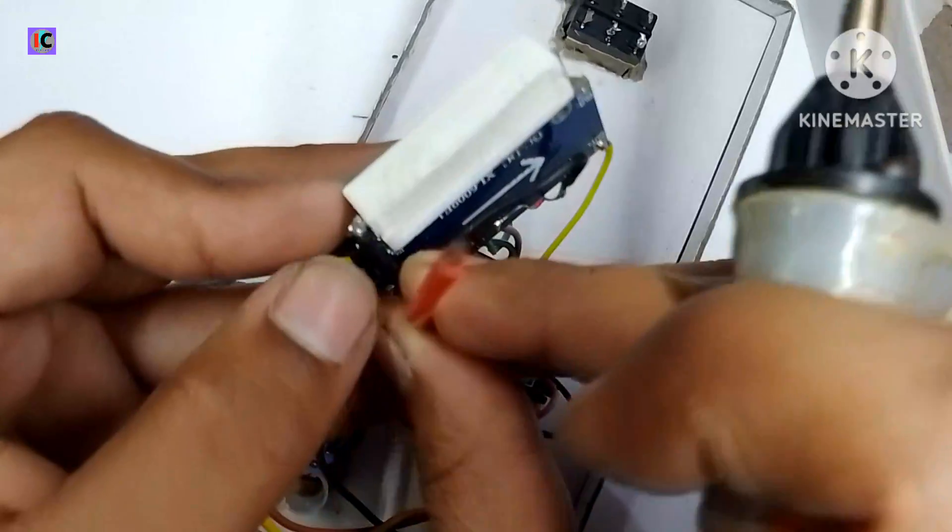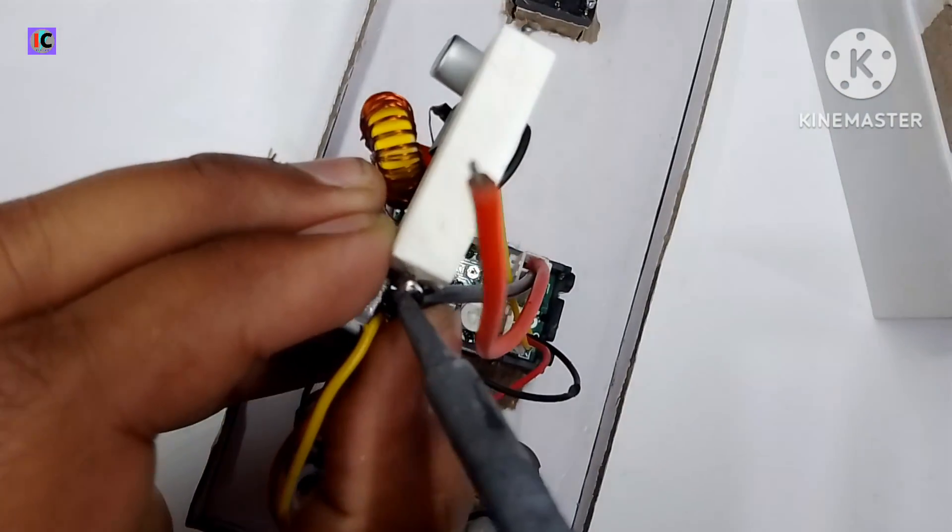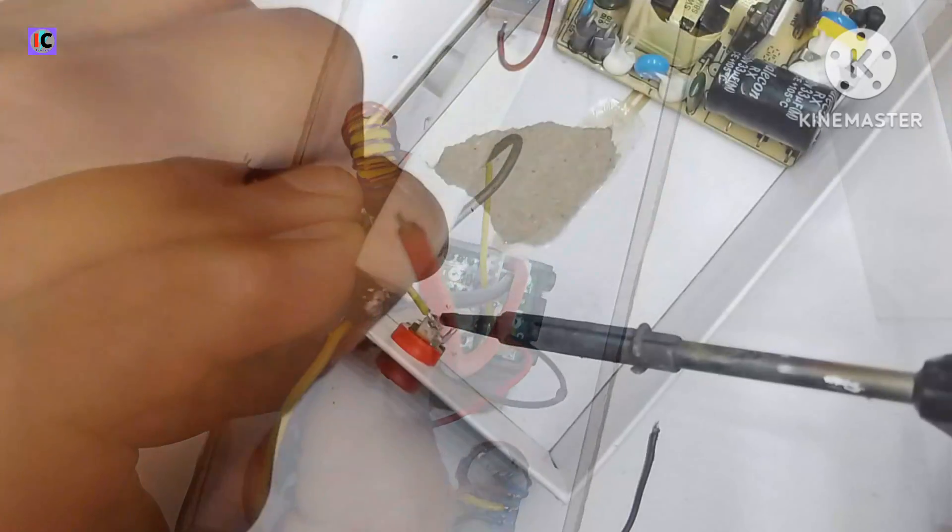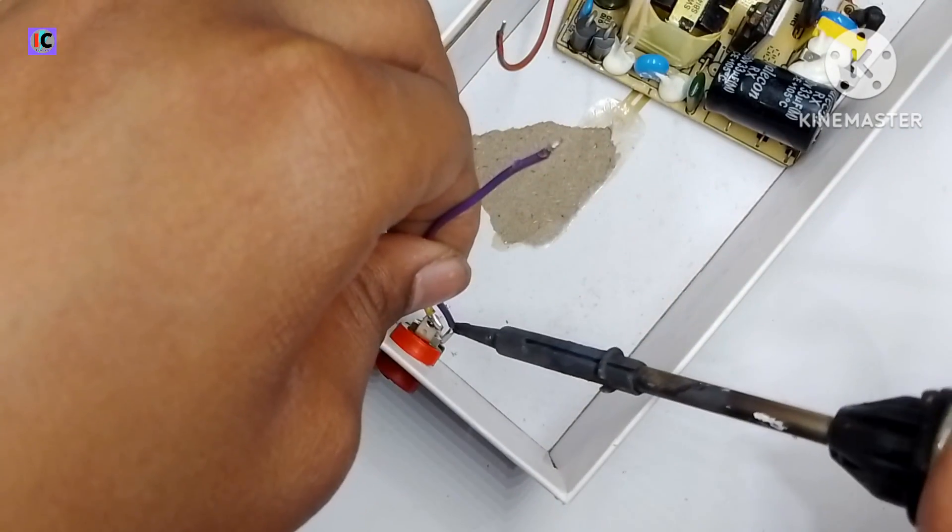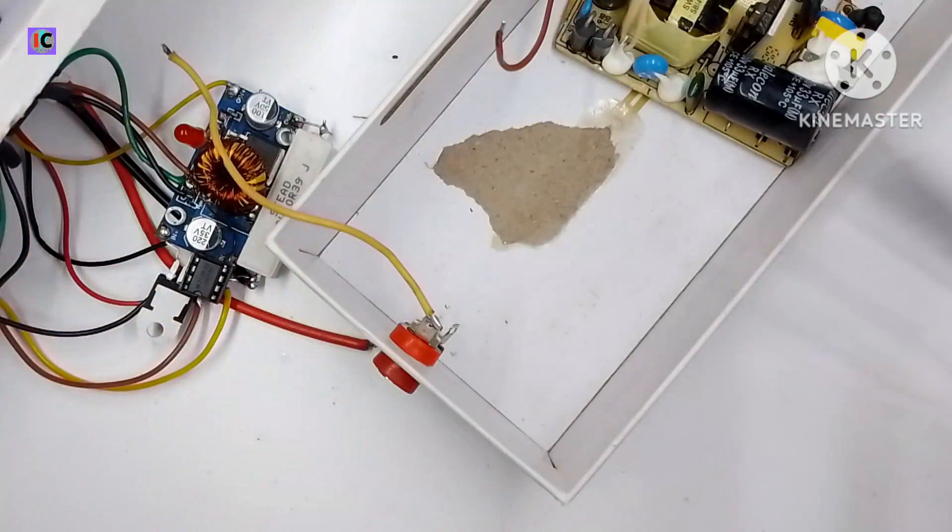Now after this I am connecting the ampere meter input wire which is the black input, and this is the output for the probes.